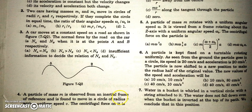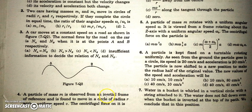In the next question, a particle of mass m is observed from an inertial frame of reference and it is moving in a circle of radius r with uniform speed. The centrifugal force on it will be zero — simply zero — because centrifugal force is a pseudo force which is to be applied only when observations are taken from a non-inertial frame.